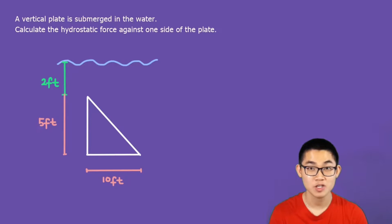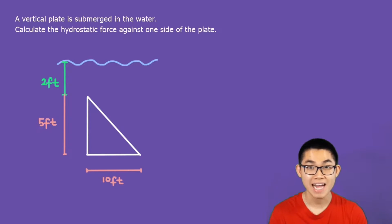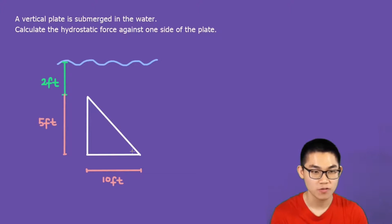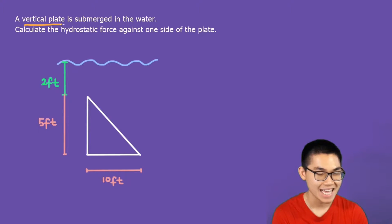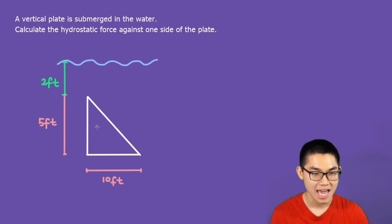In this video I'm going to show you how to calculate the hydrostatic force acting on an object submerged in water. Here we have a vertical plate submerged in water that takes the form of a triangle. We know that the height is 5 feet and the width is 10 feet.